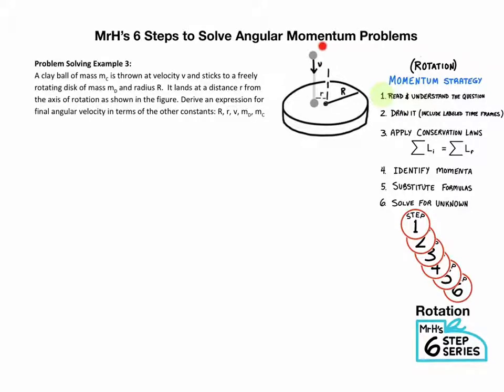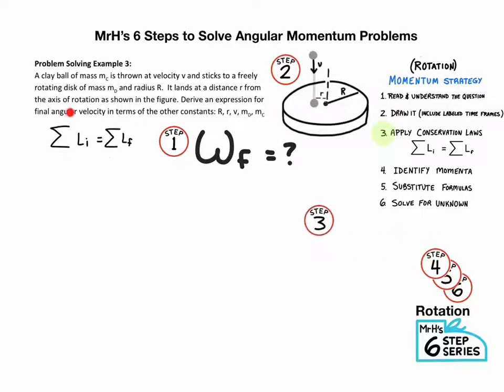Next question. A ball of clay is thrown onto a disc and it sticks to the disc, causing it to rotate with the final angular velocity. Derive an expression for the final angular velocity of the disc with a piece of clay stuck to it in terms of other constants: capital R, small r (that's where it collided), initial velocity V, mass of disc, and mass of clay. All right, so they want omega final. Step one is to identify the question, omega final equals question mark. Step two, draw a picture. Step three, apply the law of conservation of angular momentum. Eli Elf, right there.